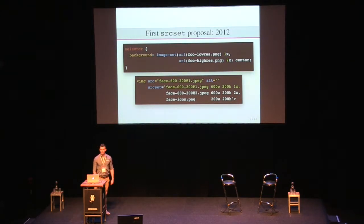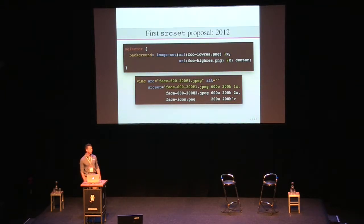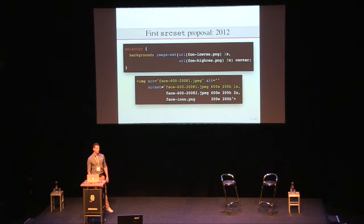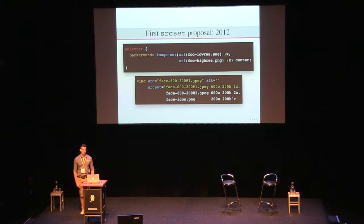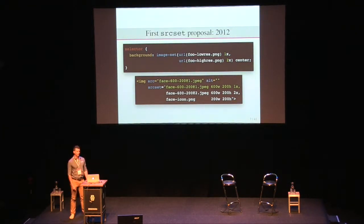So that's what Ian Hickson did the same year — he added the srcset attribute to IMG, where you can put a list of URLs and some descriptors. The descriptors in this example with W and H are not the same as the W descriptor implemented today; these were more like media queries to do art direction. Today, you use the media attribute on source instead, and the W descriptor has different semantics, which I will explain later.